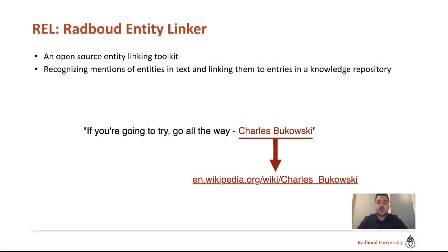REL is an open source entity linking toolkit. Its goal is to recognize mentions of entities in text and to link them to entries in a knowledge repository. For example, given the text 'Go All The Way' by Charles Bukowski, we will be able to find the entity Charles Bukowski and relate it to his respective Wikipedia article.